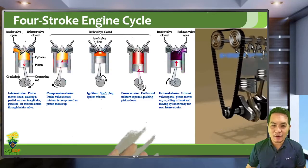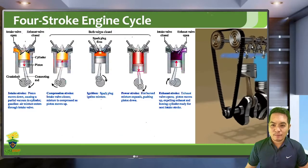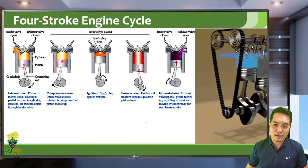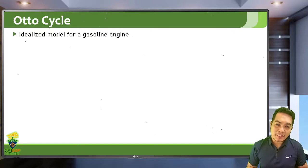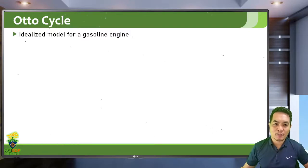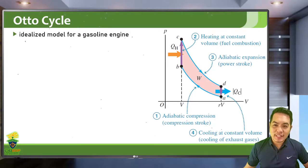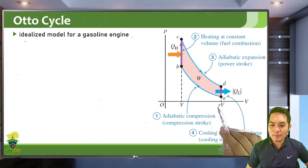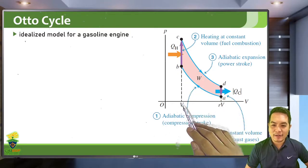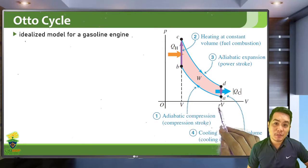That is basically how a four-stroke engine cycle works. An idealized model for a gasoline engine follows the Otto cycle, named after German inventor Nikolaus Otto who designed the Otto engine in early automobiles. In the Otto cycle PV diagram, from A to B is the compression stroke. The initial volume is r times V and the final volume is V, where r is the compression ratio — the ratio of initial volume over final volume.